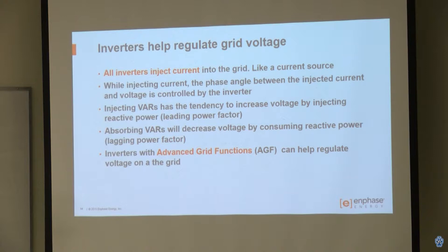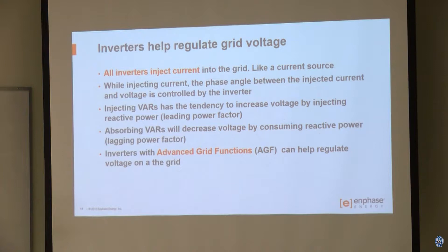How can inverters help regulate grid voltage? All the inverters inject current into the grid — they act like a current source, tracking the voltage and injecting current. But I can change the phase angle of that injected current relative to the voltage — I can advance or retard it relative to the peak. By doing that, I can either inject VARs or absorb VARs. When I'm injecting VARs I tend to raise the voltage; when I'm absorbing VARs I tend to decrease it. Inverters with advanced grid functions use this compensation scheme to help regulate the voltage on the grid.